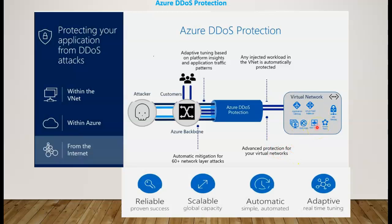Let's say you have a web application and the normal user count is maybe a thousand per hour, and an attacker sends millions of web page requests within one hour. If the server is not configured with autoscaling, your application will go down because it can't handle that huge traffic. But if autoscaling is enabled, the resources never go down — instead they scale up and up, and at the end you're paying the bill for those resources for non-legitimate users. That's all about the DDoS attack.